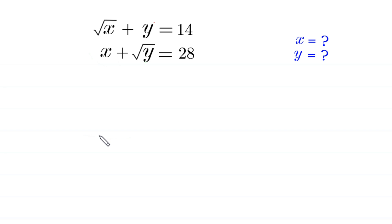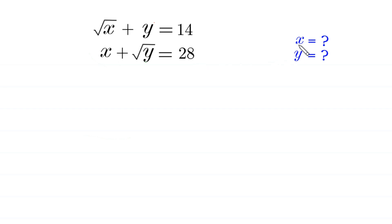Hello everyone, welcome to how to solve this very nice system of equations. Root x plus y is equal to 14, and x plus root y is equal to 28. We need to find all possible values of x and y.